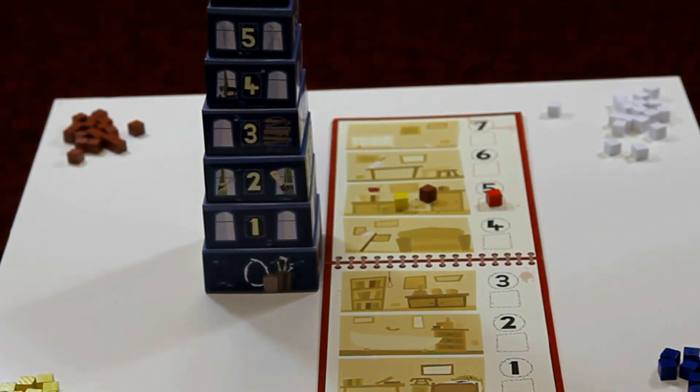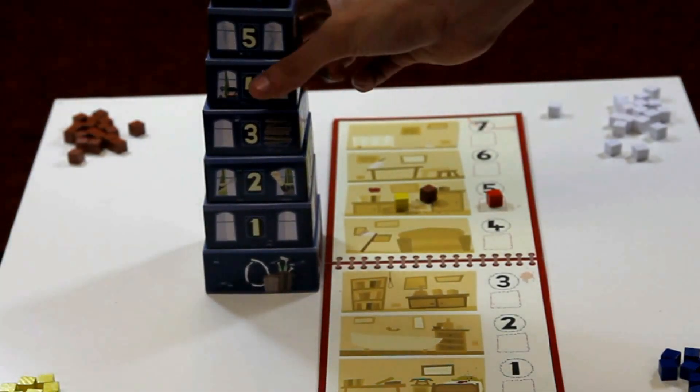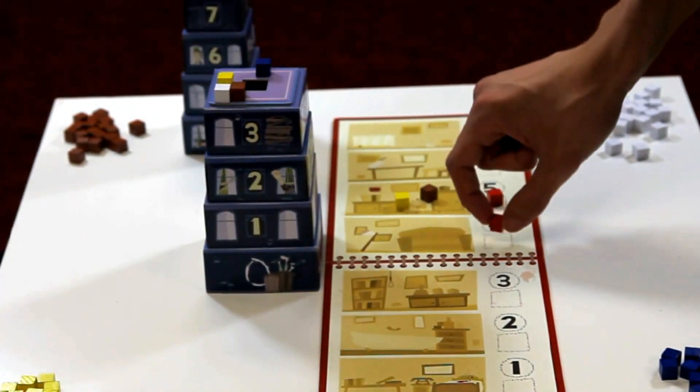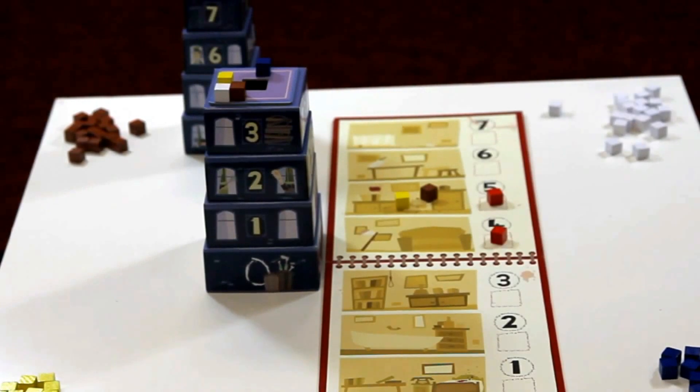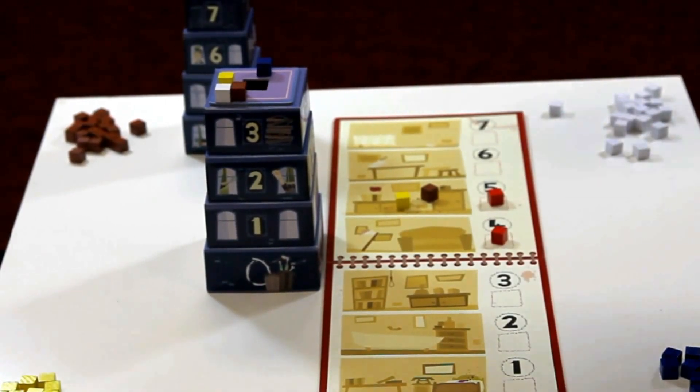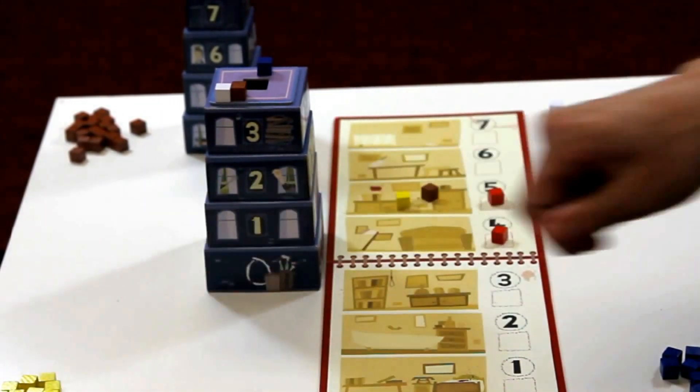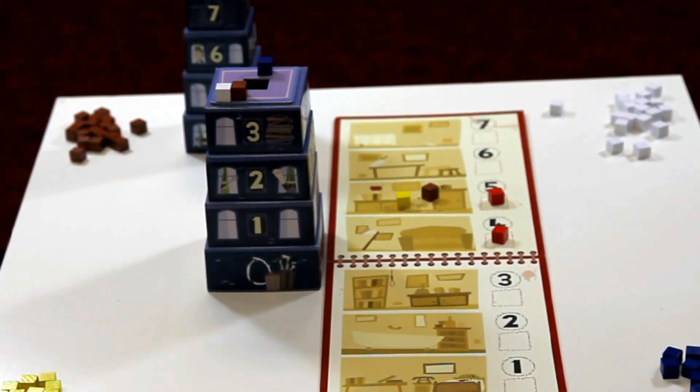The yellow player thinks that the second body is located on the fourth floor. The second body is placed on the matching floor on the investigation sheet. Because yellow is the player who found the body, they remove their cube from the tower. This is the only time in the game that cubes will ever be removed from the tower.